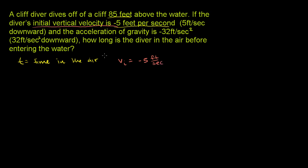What's going to be his velocity right when he enters the water — his final velocity? He's going to start at negative 5 feet per second, and every second that goes by, he's going negative 32 feet per second faster. So if you multiply the acceleration times time, that's how much his velocity has increased. His final velocity is negative 5 minus 32 feet per second squared times t. The units work out to feet per second.